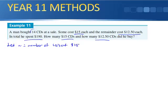And therefore, what have we got left? Well, if there were 14 CDs that the person brought in total, we have 14 minus n equals CDs at $12.50. That's what's left over.